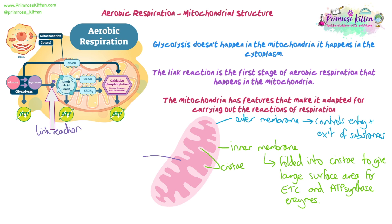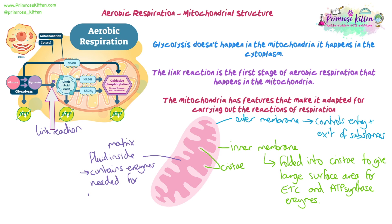Then we have the matrix, which is the fluid inside the mitochondria — like the cytoplasm inside the cell, the nucleoplasm inside the nucleus, or the stroma inside the chloroplast. It's the fluid inside, and it contains all the enzymes needed for respiration. It also contains mitochondrial DNA — small loops of DNA — 70S ribosomes, and some other proteins and fatty acids. It contains everything needed for the reactions of respiration that happen in the matrix.